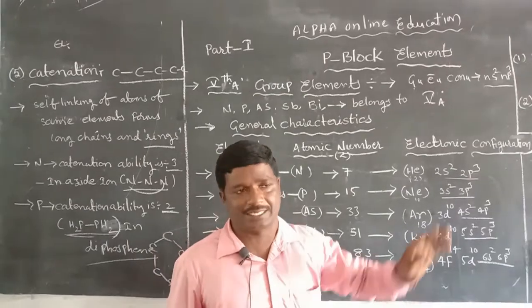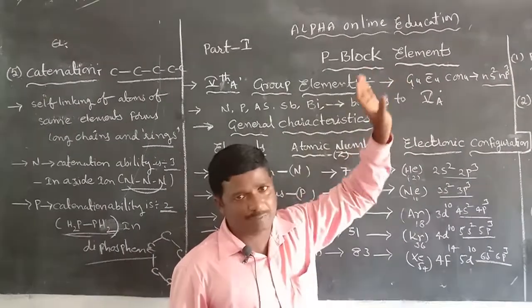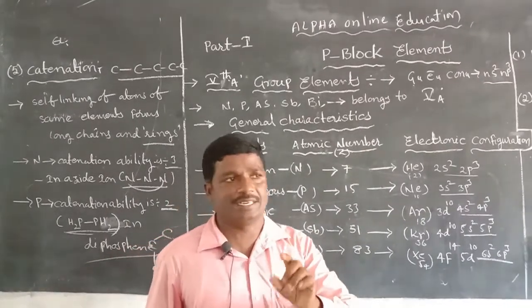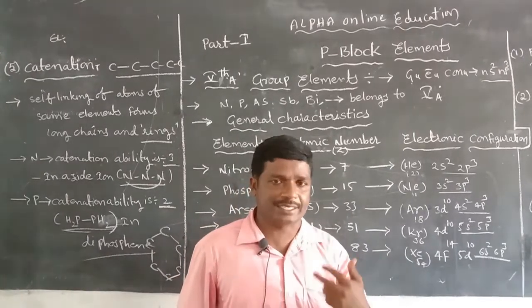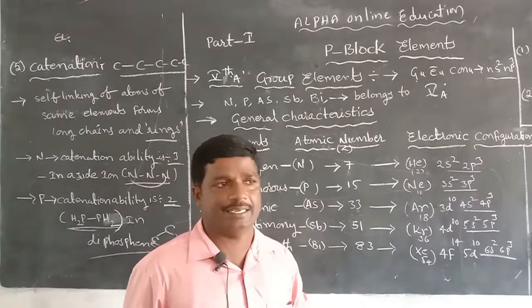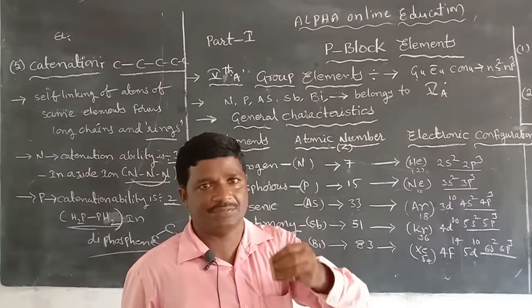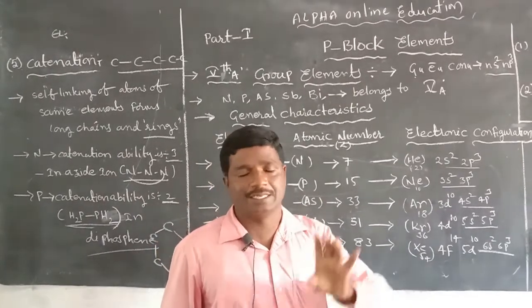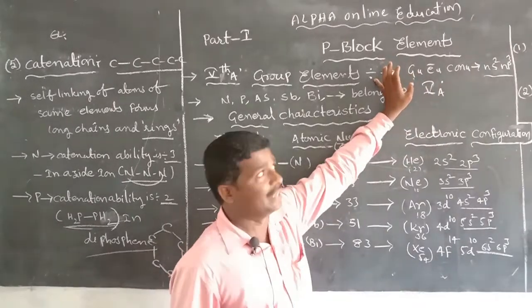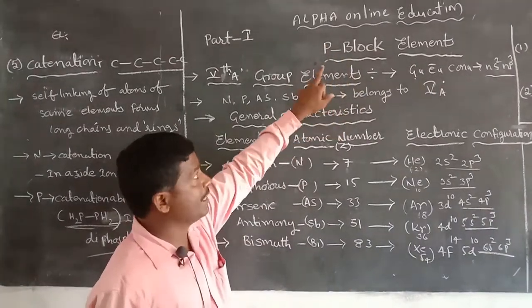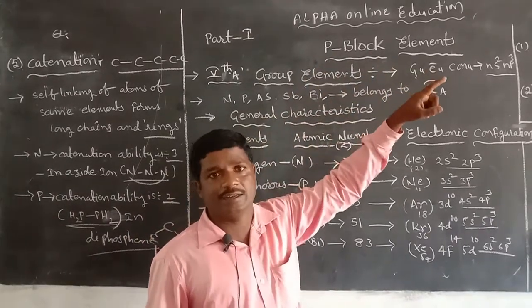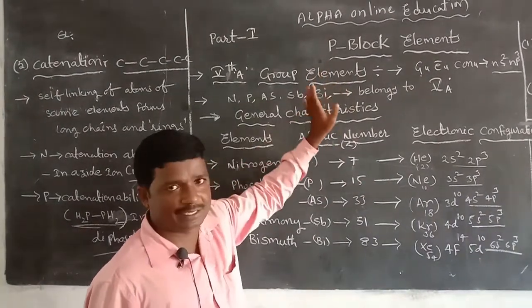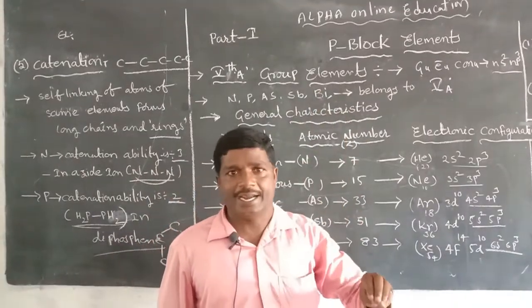The s-block elements are those where the differentiating electron enters into the s sub-energy level. The s-block elements are considered in two groups: the first group (Group 1A), also called alkali metals, and the second group (Group 2A), also called alkaline earth metals. The p-block elements are those where the differentiating electron enters into the p sub-energy level or p orbital.